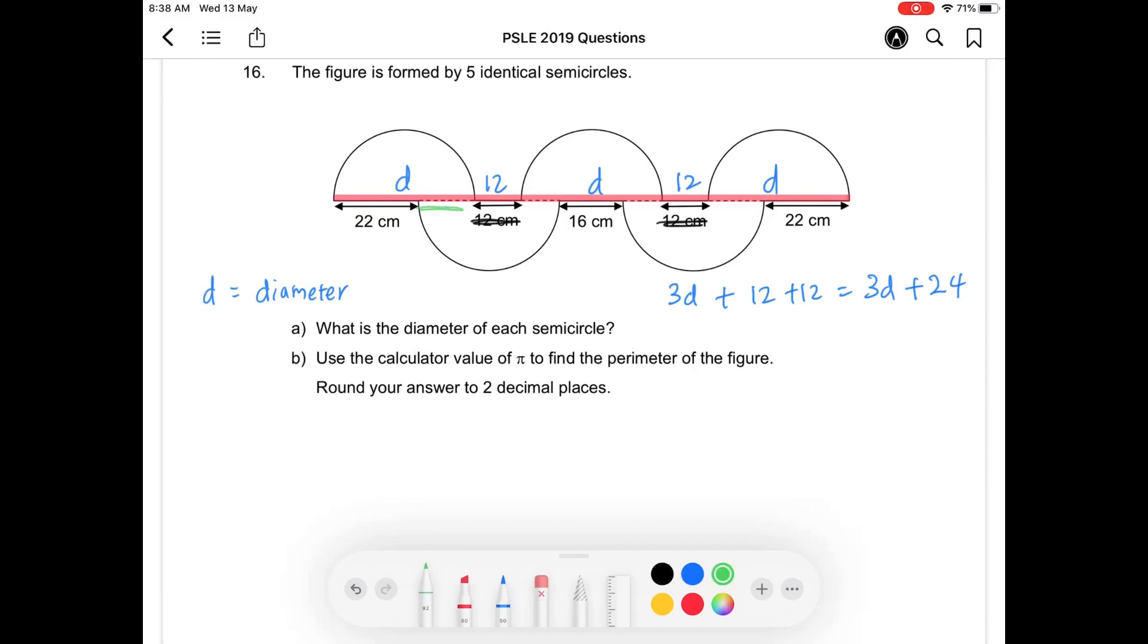I'm just going to highlight in green to represent the diameter for the semicircle below the red line. So there's another one here. So there are 2D. So together with 22 and 16 and another 22 here, we can form another equation to represent the dimension of the red line like this. So we have 2D plus 22 times 2 plus 16. That will give me 2D plus 60.